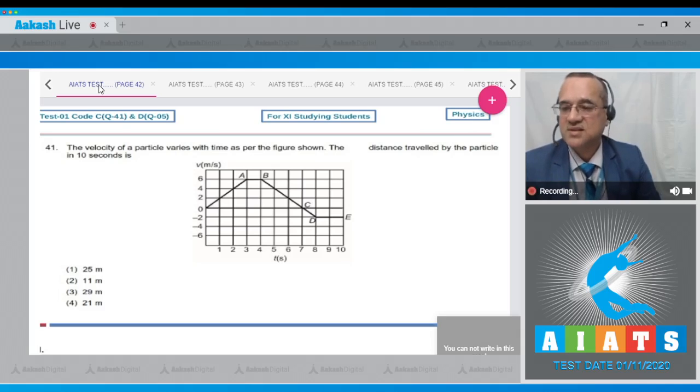Question number 41 says the velocity of a particle varies with time as per the figure shown. The distance traveled by the particle in 10 seconds is. These are four options. The graph is between velocity and time, whereas required is the distance.